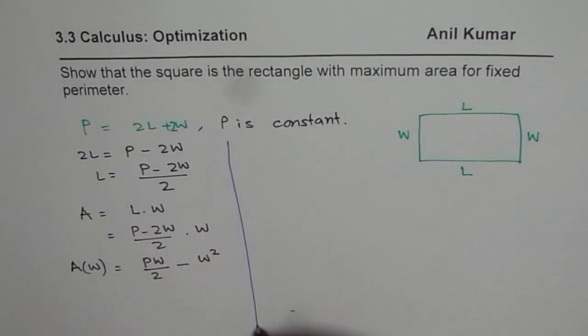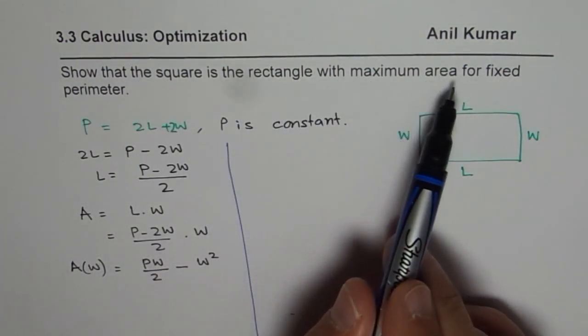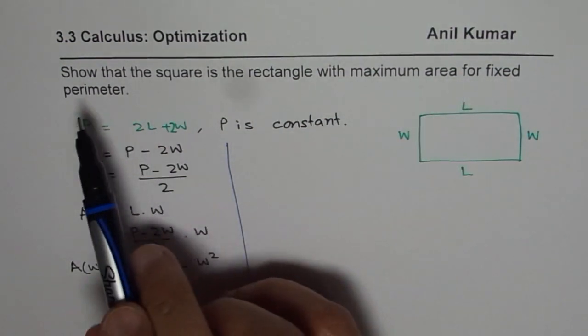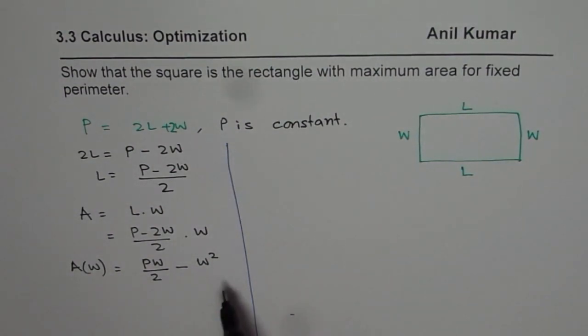Now the question is, show that the square is the rectangle with maximum area for fixed perimeter. Now if perimeter is fixed, then length and width, how are they related?